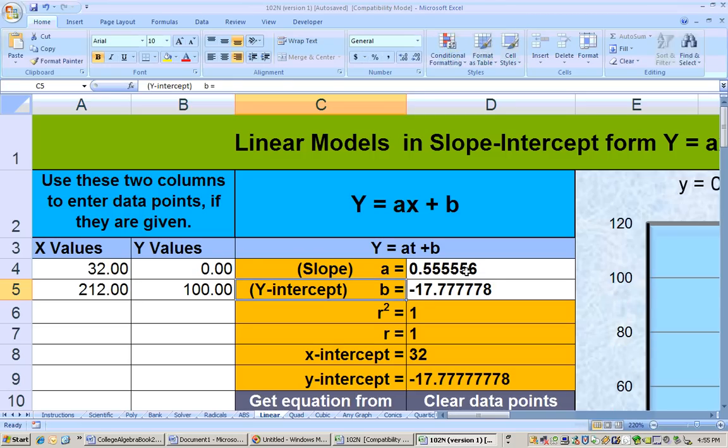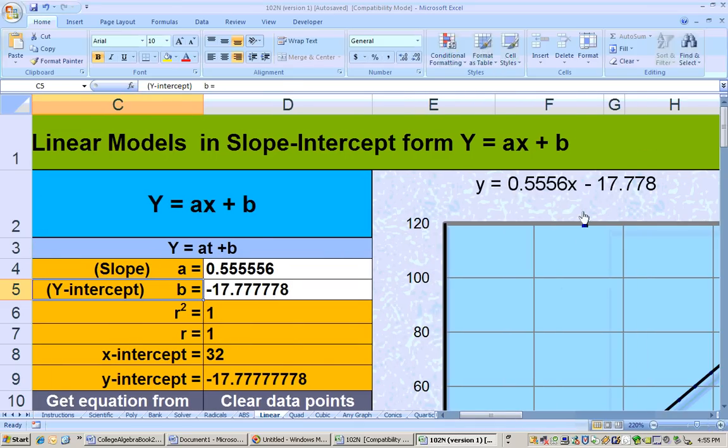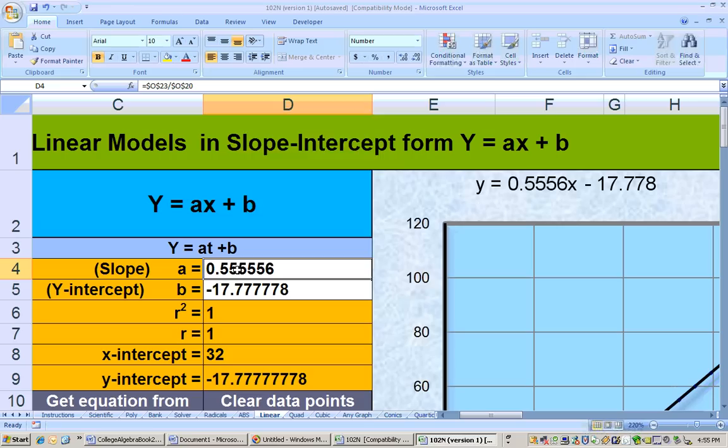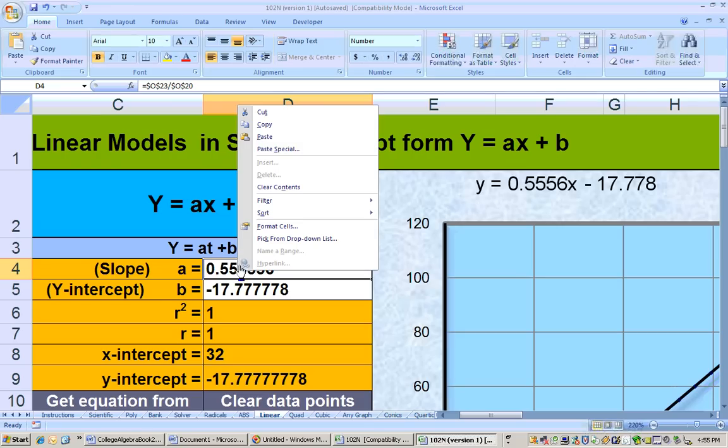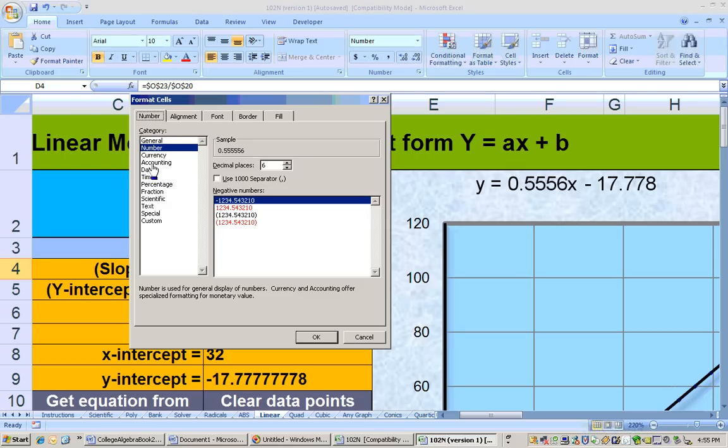There's your 0.5 or 5 ninths, and there's your negative 17.7 right there, so your equation is right there, and if you wanted to see those in fraction form, we could right mouse click on it and format the cell so that it's a fraction,